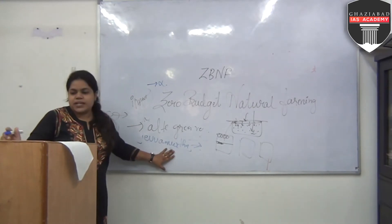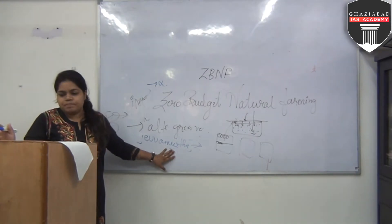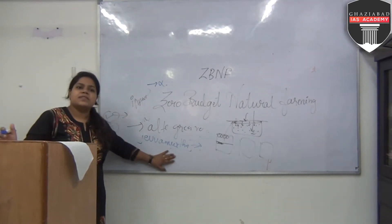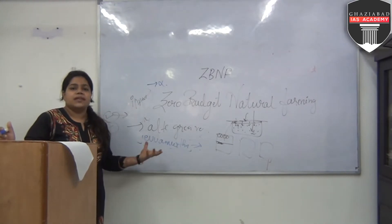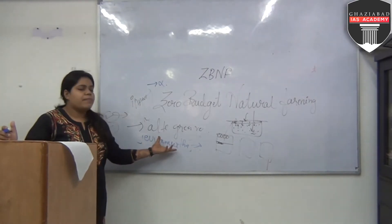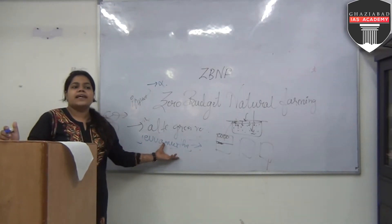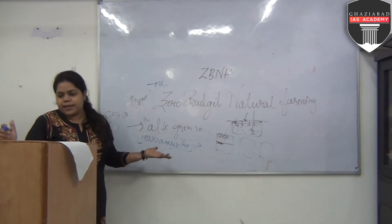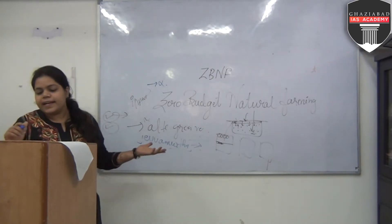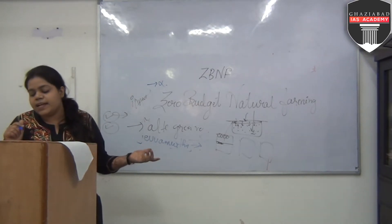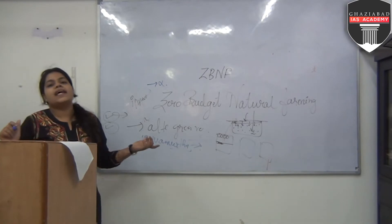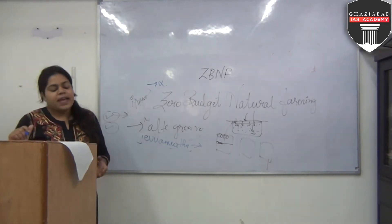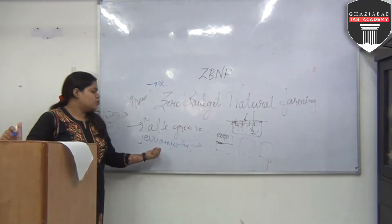This Jeevamurtha mixture is used for fermented microbial growth because we are using biomass. It enhances microbial growth and has catalytic activity that promotes the activity of microorganisms.